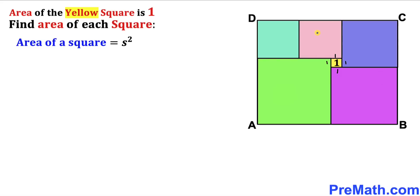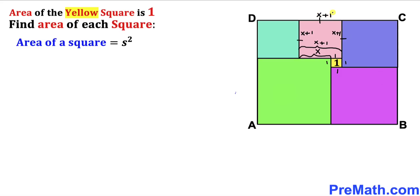Let's focus on this pink square and suppose that this side length is x units. Then this whole side length is going to be x plus 1. Since we are dealing with a square, each side is going to be x plus 1.